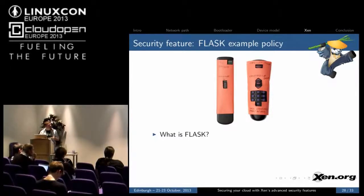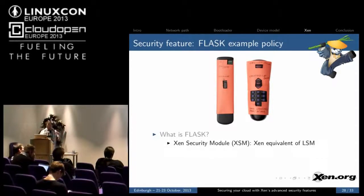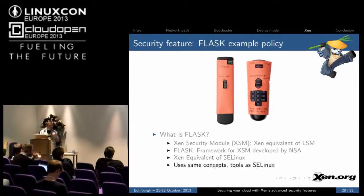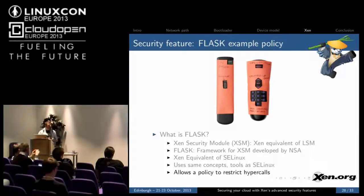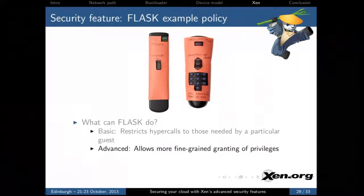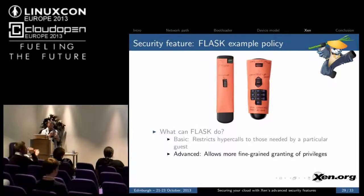The next feature we're going to talk about is the Flask example policy. The Xen Security Module (XSM) is a set of hooks that allow you to build a plug-in security module, just like the Linux Security Module. Flask is a framework for XSM, developed by the NSA — basically, it's the Xen equivalent of SE Linux. It uses the same concepts as SE Linux, and the same user space tools to compile the policies. At a basic level, it allows you to restrict the hypercalls which can be made for a guest to those needed by a particular guest. At a more advanced level, it allows you to grant fine-grained privileges and break things down into really small subdomains.